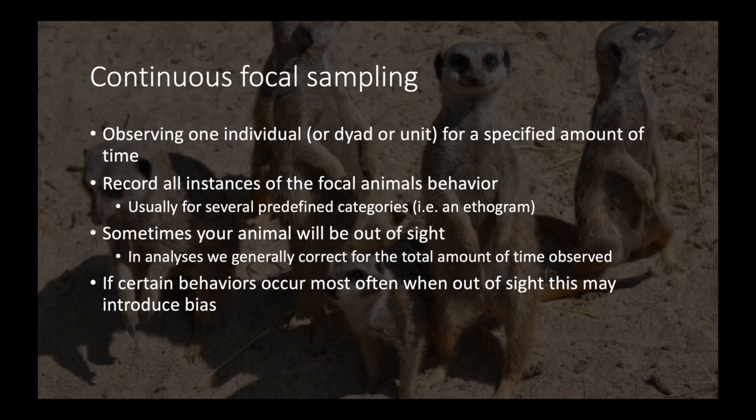If certain behaviors occur most often when they're out of sight, this might introduce some bias. For example, if animals tend to sneak off for mating events or if they try to eat away from the group, we may not see those, and it may introduce bias into our data.